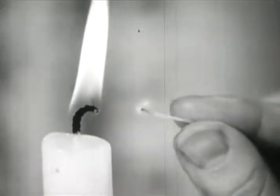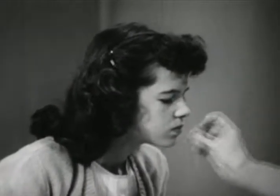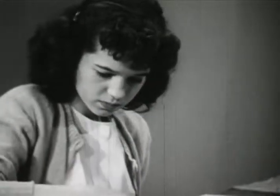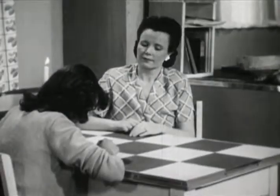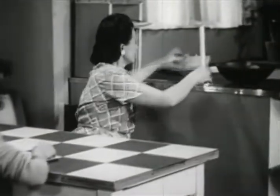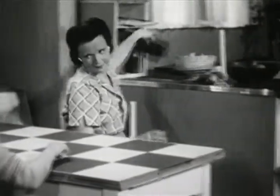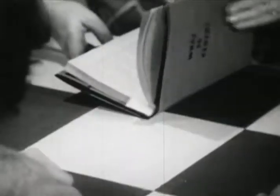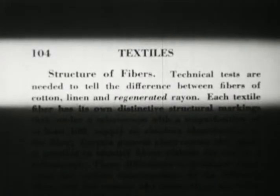Now let's test the cotton yarn. Cotton smells like burning waste paper. No black or brownish ball though — nothing much but scorched looking ends. You yourself can make the simple test to distinguish wool and acetate rayon. But the results from burning cotton are the same as from two other fibers, linen and regenerated rayon. Mrs. Adams' book on textiles says that technical tests are needed to tell the difference between fibers of cotton, linen, and regenerated rayon.